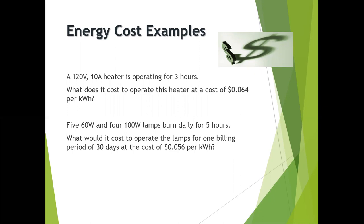Per kilowatt hour we've got five 60 watt and four 100 watt lamps for five hours. We take our volts and our current, 120 times 10, we get a power rating of 1200 watts or 1.2 kilowatts. We multiply that by our hours, 1.2 kilowatts times three times our pennies, and we get a cost of 23 cents.